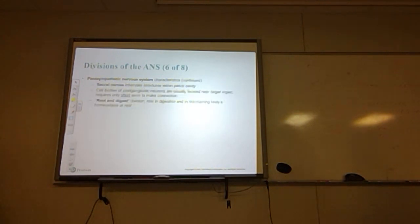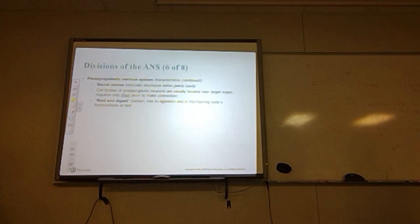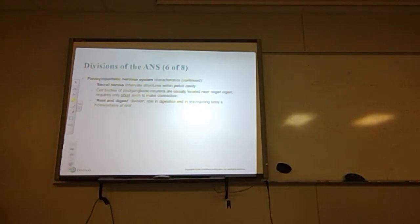The sacral nerves innervate structures within the pelvic region. The cell bodies of the post-ganglionic neurons are usually located near the target, thus requiring only a short axon to make the connection. This is the rest-and-digest division, and it plays a role in digestion and maintaining body homeostasis at rest.